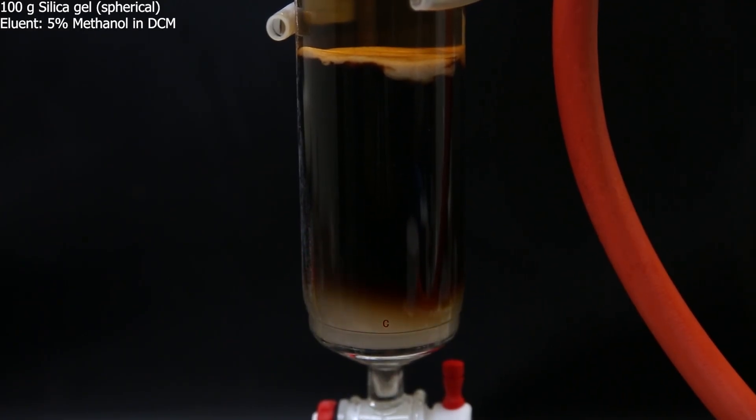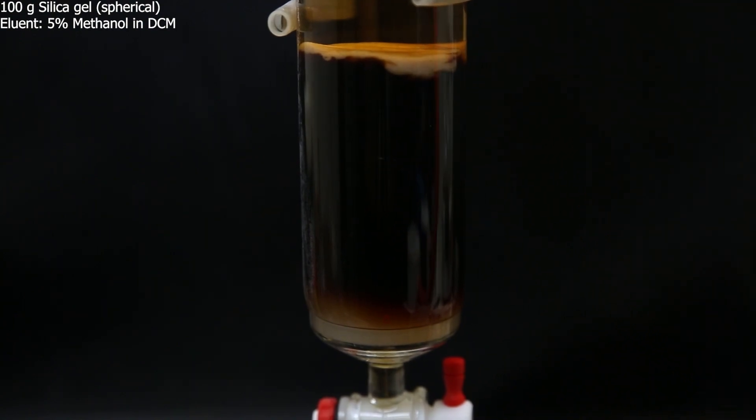I force a bunch of eluent through and collect the first bit. But this time, the yellow doesn't separate from the black stuff like it did before. So I am forced to also take some of the black stuff to collect all of the product, since it should be in the solvent front.